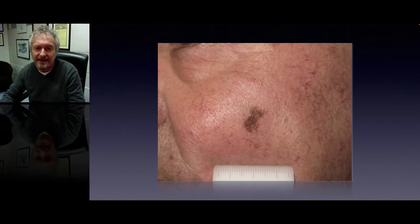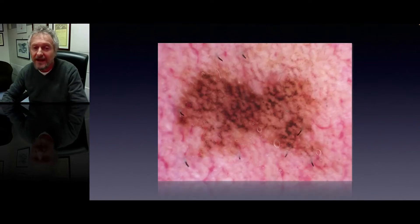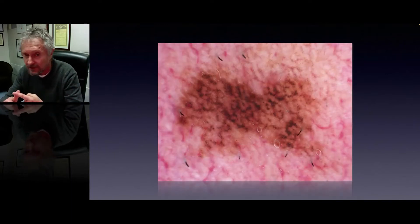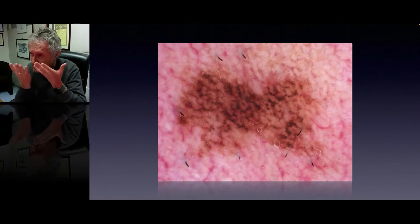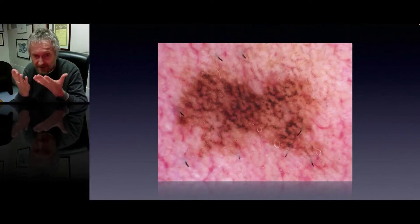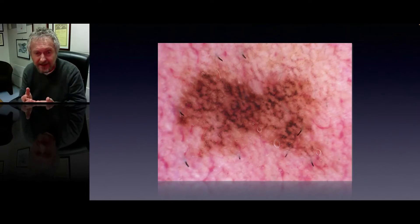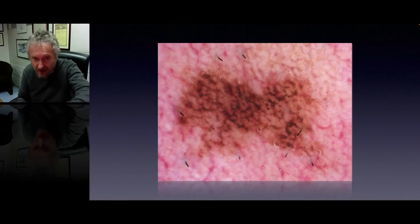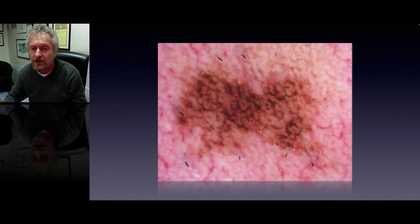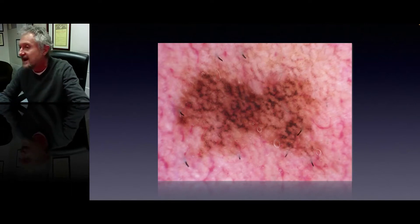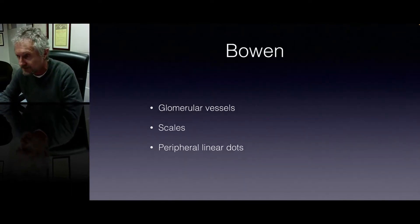Here is an example of a melanoma in which you don't see white follicles, you don't see superficial sharply demarcated pigmented lines, but instead you see gray color, rhomboidal structures, and an annular-granular pattern. So immediately you can realize that the morphology of melanoma is completely different.